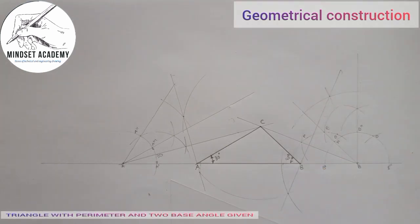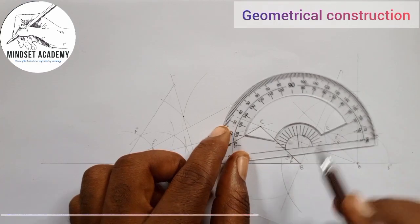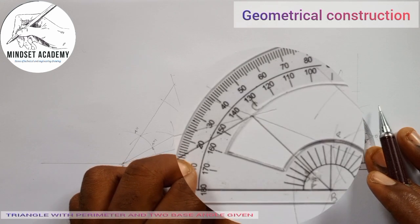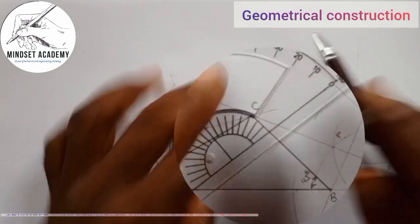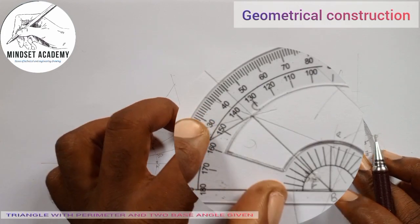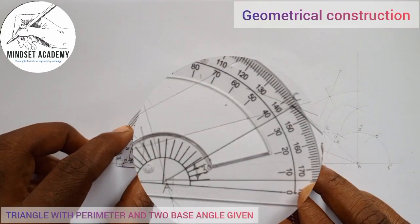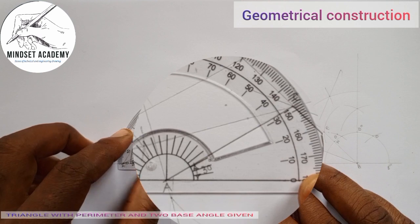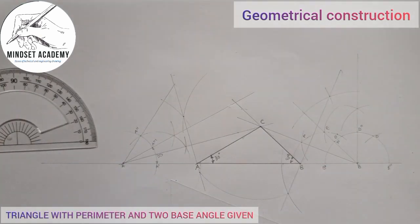So we can actually confirm if we are correct or not. If I take my protractor to measure the angle 45 degrees, taking this point at B, you discover that the line we have here — tracing it — reads 40, 45. You can see? And the same thing at 30 degrees: if I come to this point, you can see that the angle between this line and the base is 30 degrees. So this is how we can actually construct a triangle when the perimeter is given and also when the two base angles are given.